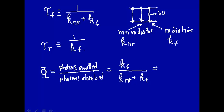All the photons we put in to excite the molecule would come out as fluorescence. And using these definitions, the quantum yield can be expressed as the fluorescence lifetime divided by the radiative lifetime tau r.